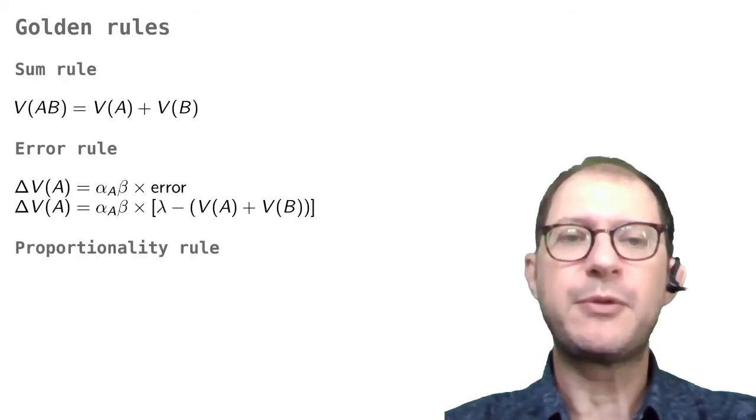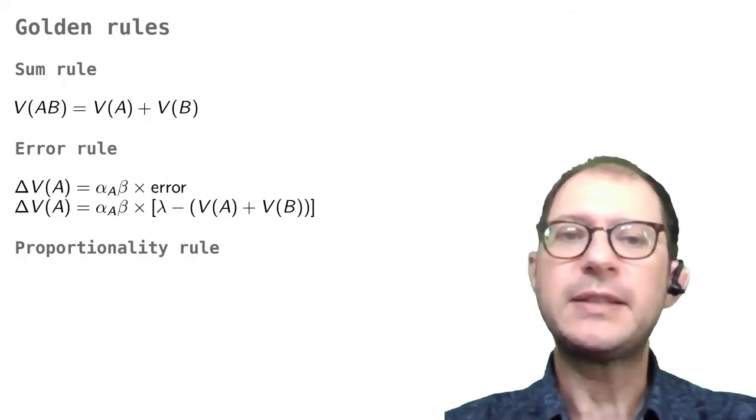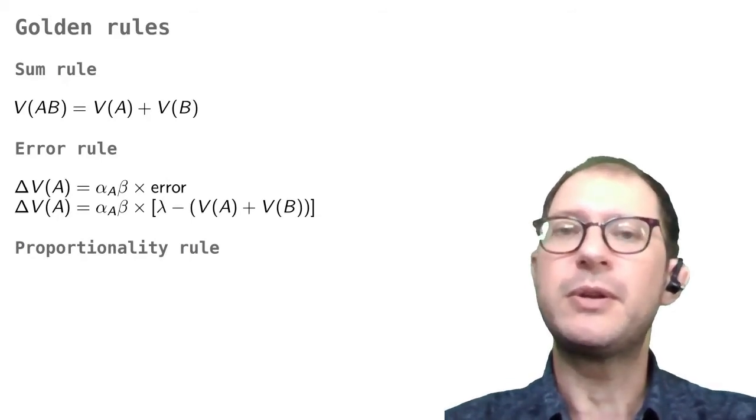The second rule is the error rule, the idea that learning goes on until all errors are corrected. So if there is an error, there will be learning, and if there is no error, there will be no learning.